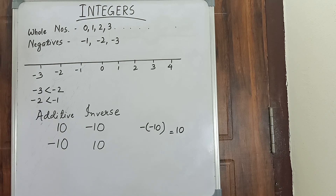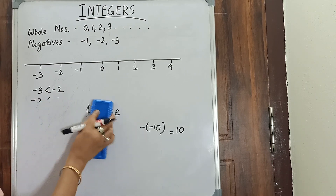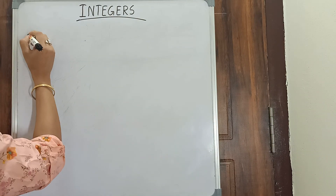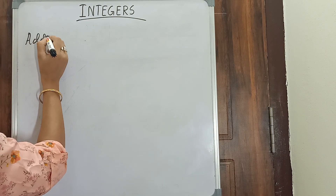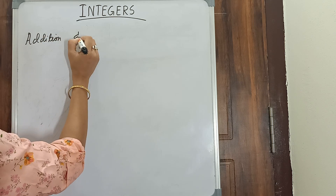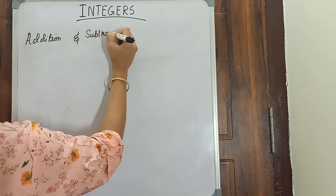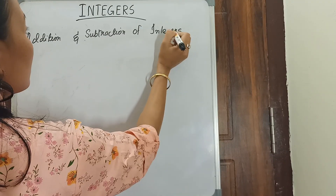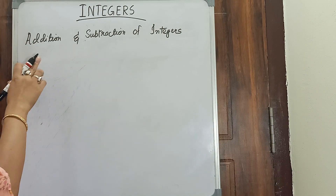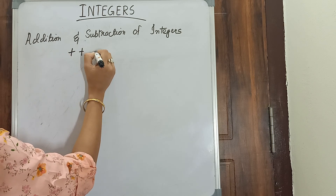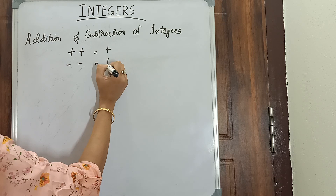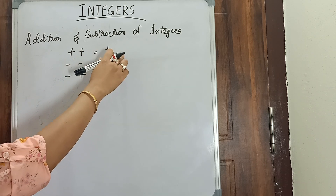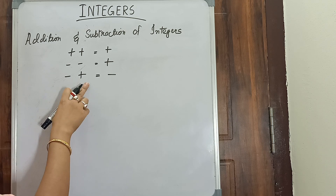Now let us know about the addition and subtraction of integers. For addition and subtraction: plus and plus equals plus, minus and minus equals plus, and minus and plus equals minus. That means if the signs are the same, the answer is positive, and if the signs are different, the answer is negative.